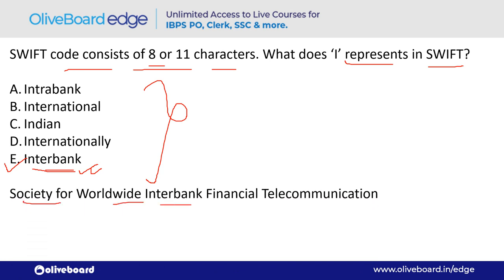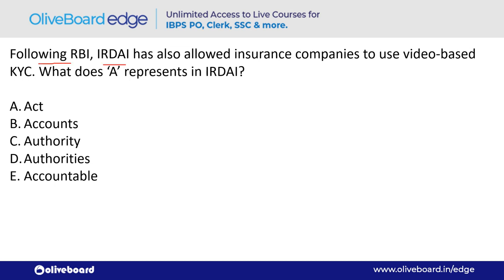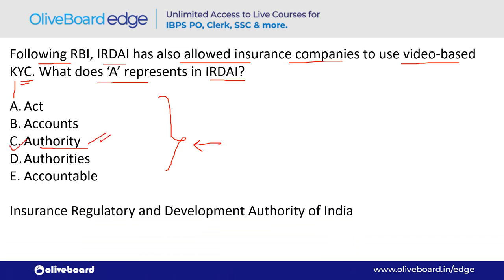SWIFT stands for Society for Worldwide Interbank Financial Telecommunication. In exams, questions can ask about the letter I — Interbank — or F for Financial. Also, KYC is Know Your Customer. Regarding IRDAI, which regulates insurance companies: A in IRDAI stands for Authority — option C.